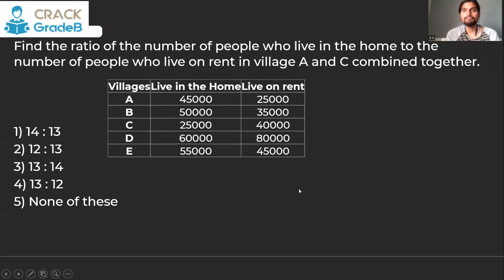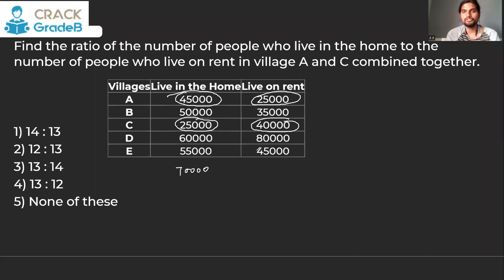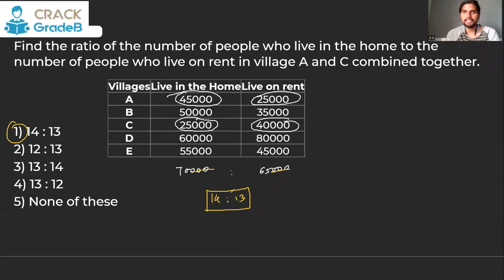Question 5: Find the ratio of the number of people who live in home to rent in villages A and C together. In A, 45,000 and in C, 25,000 live in home — total 70,000. In A, 25,000 and in C, 40,000 live on rent — total 65,000. The ratio of 70,000 to 65,000 simplifies to 14 is to 13. That was the easy set, just for practice.